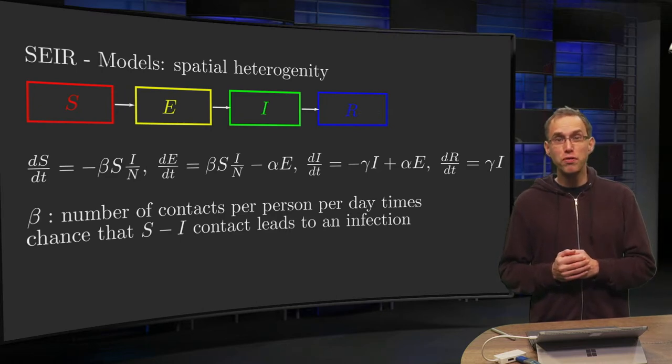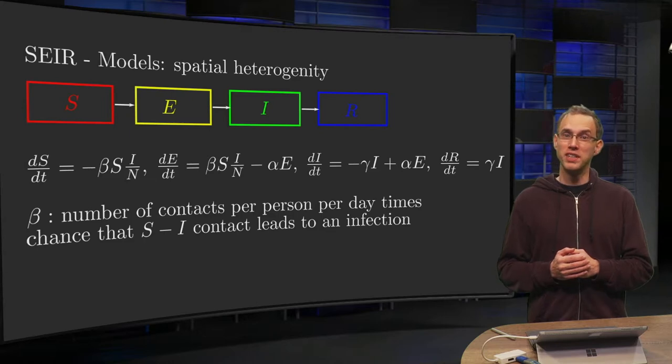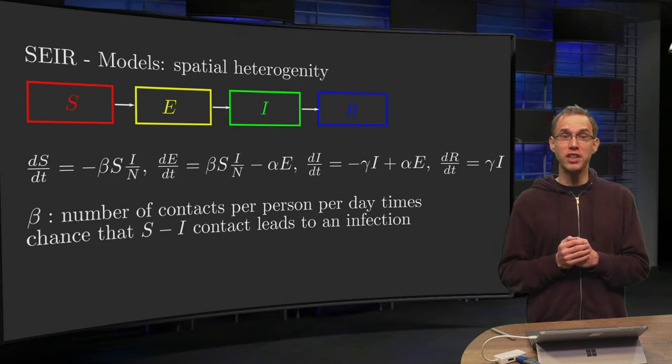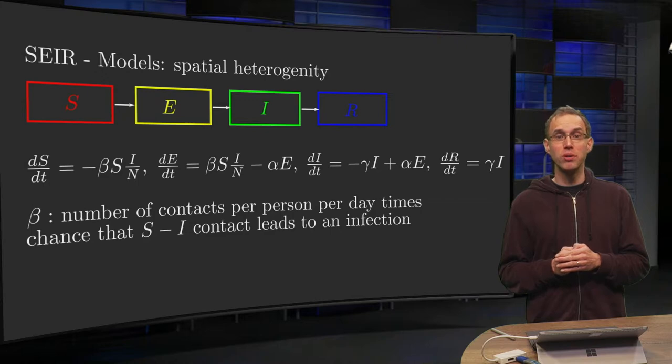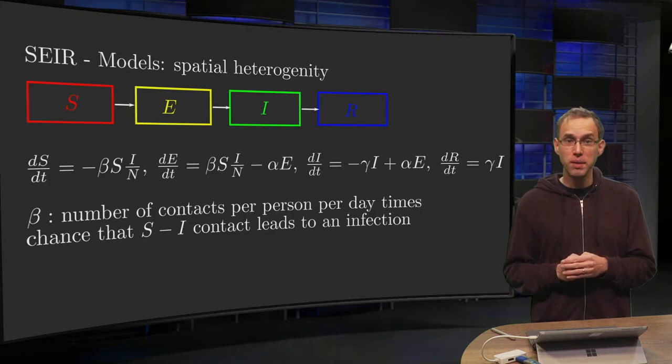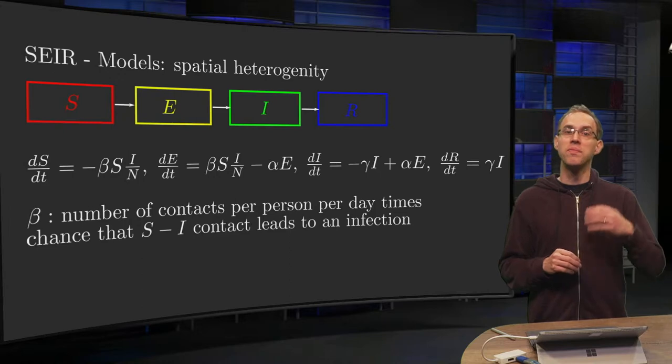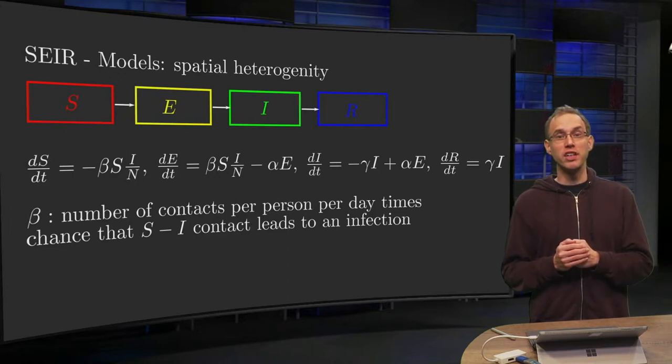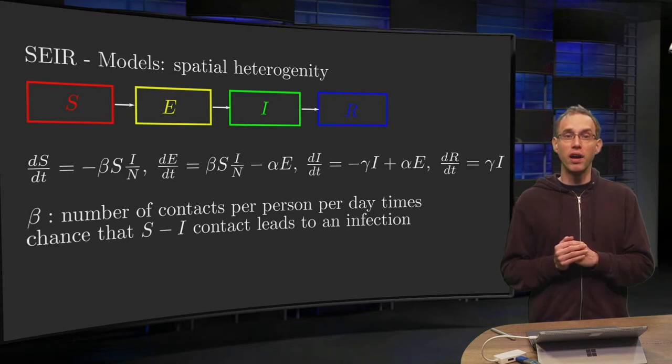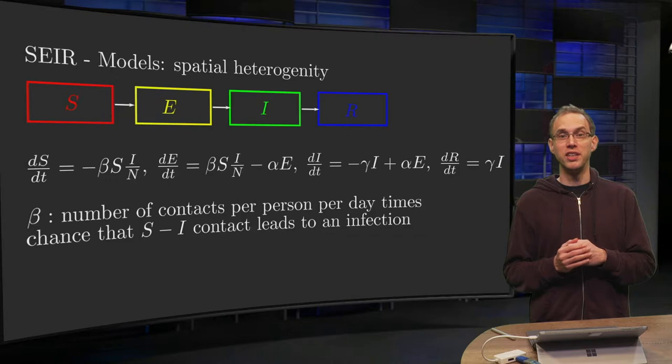We have noticed two fundamental problems with the basic SEIR models. It does not account for spatial heterogeneity in the spreading coefficient, and it also does not account for temporal changes of the spreading coefficient. In this video we will address the first issue.